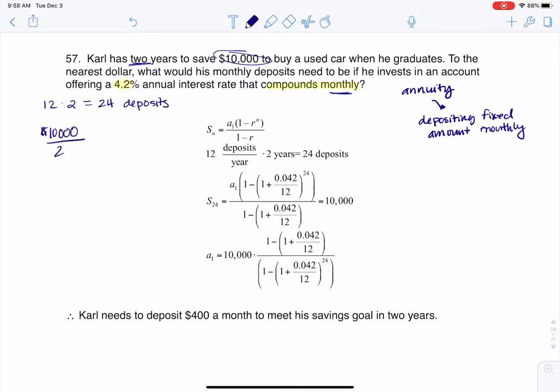If we were going to do this, that would be according to my calculator $416.67. Now that would just straight up get you that money in two years if you had no interest. But since Karl's going to be earning about 4.2% interest, when I go to find this deposit amount, it's going to be a little bit less than $416.